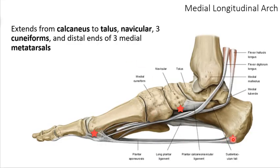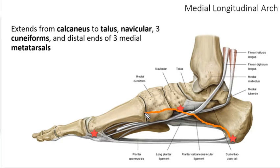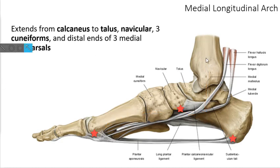The longitudinal arch starts at the calcaneus and curves up — this is the medial view, so the big toe side. The arch is hollowed out at the peak, and you have the plantar fascia — dense connective tissue — keeping the front and back of the arch close together. If too much weight comes down, it forces the front and back to splay outward. The plantar fascia resists that collapse, though it's not the only tissue doing so.